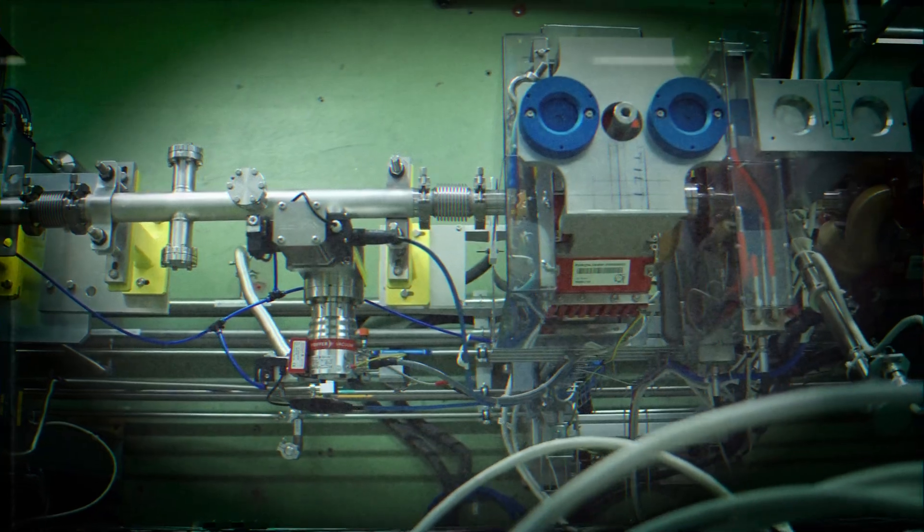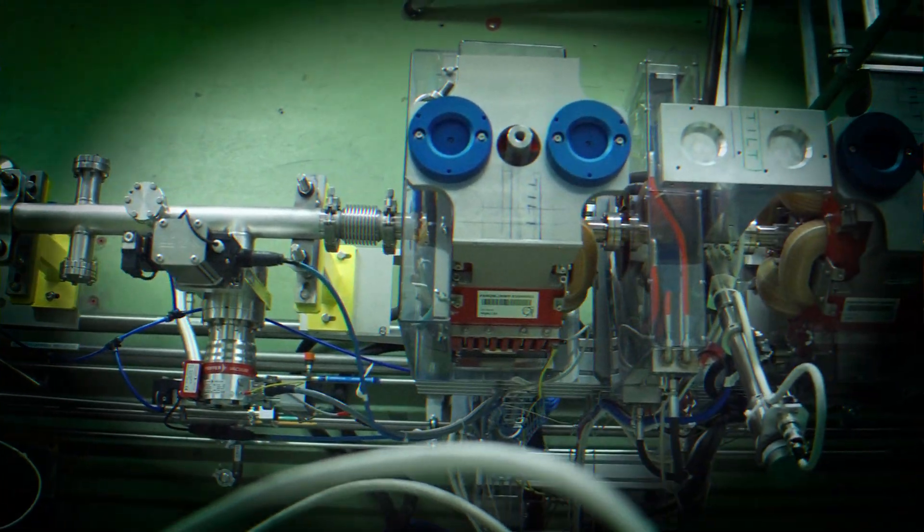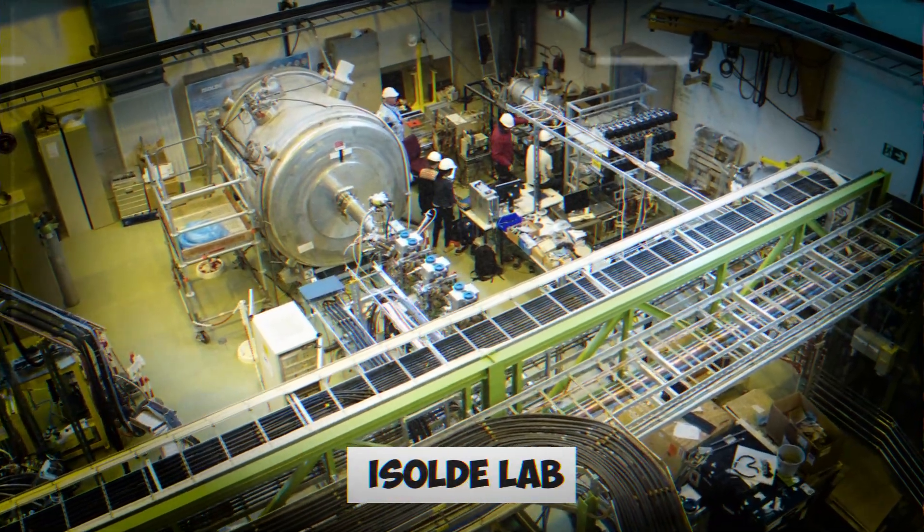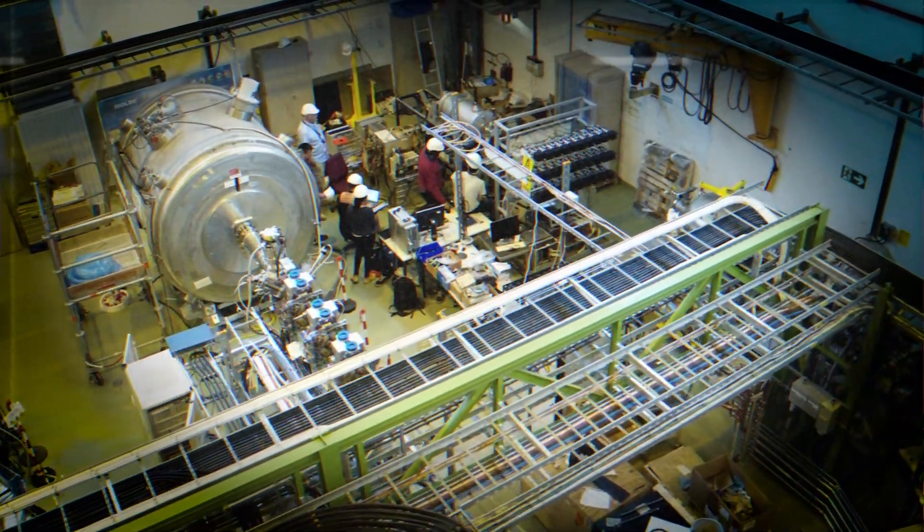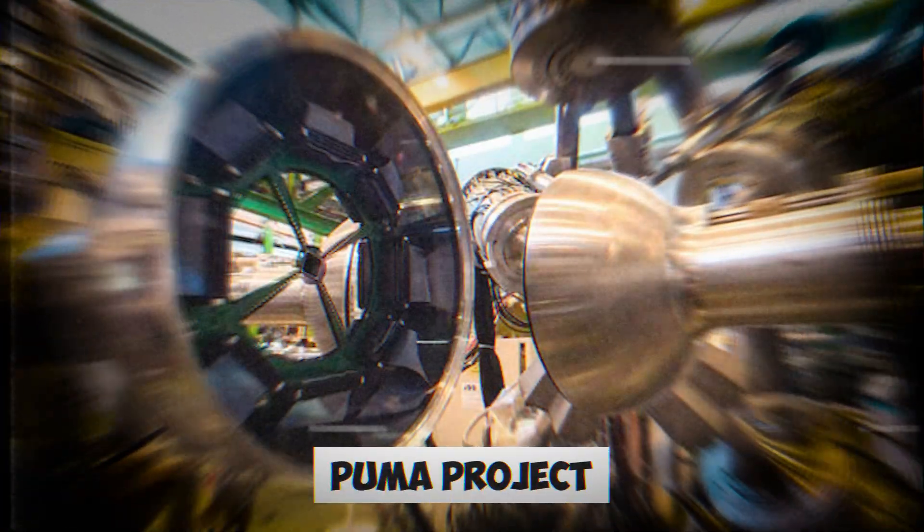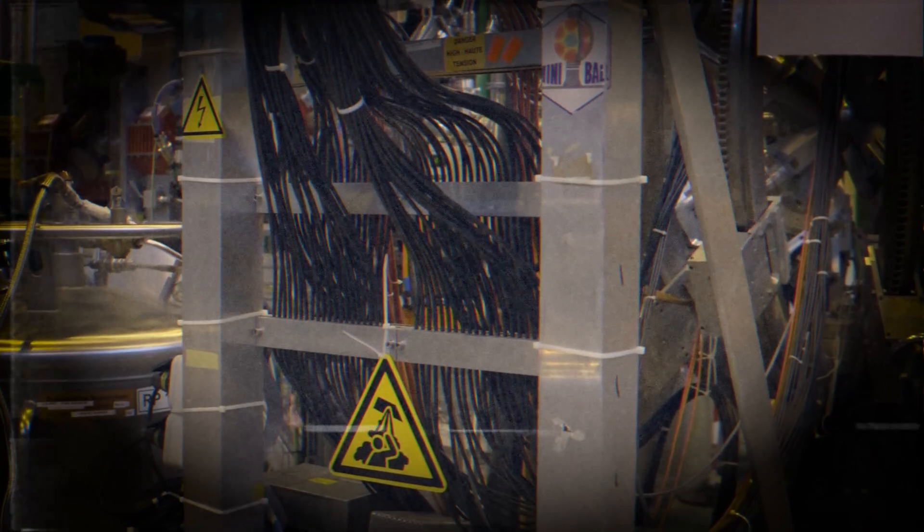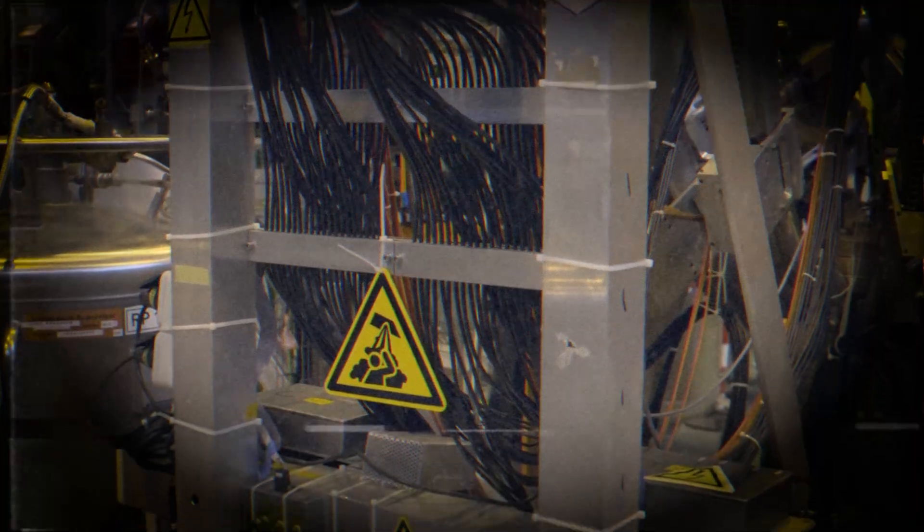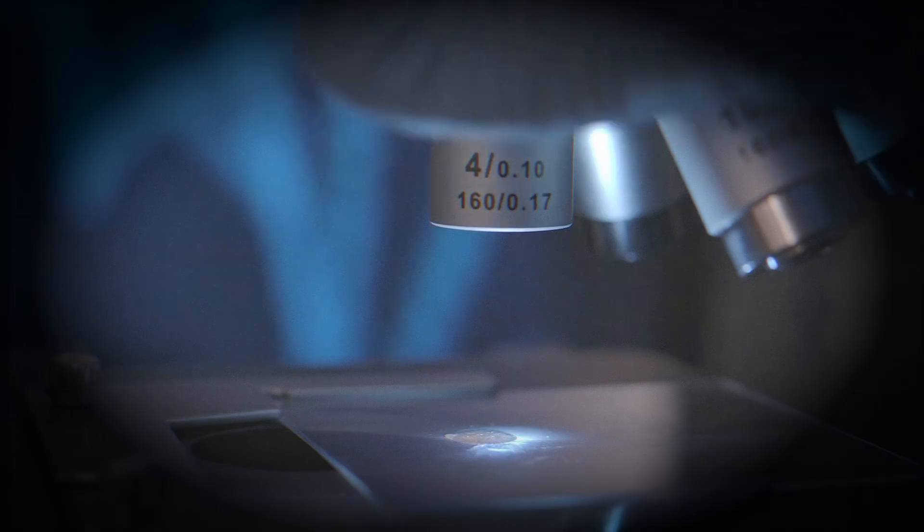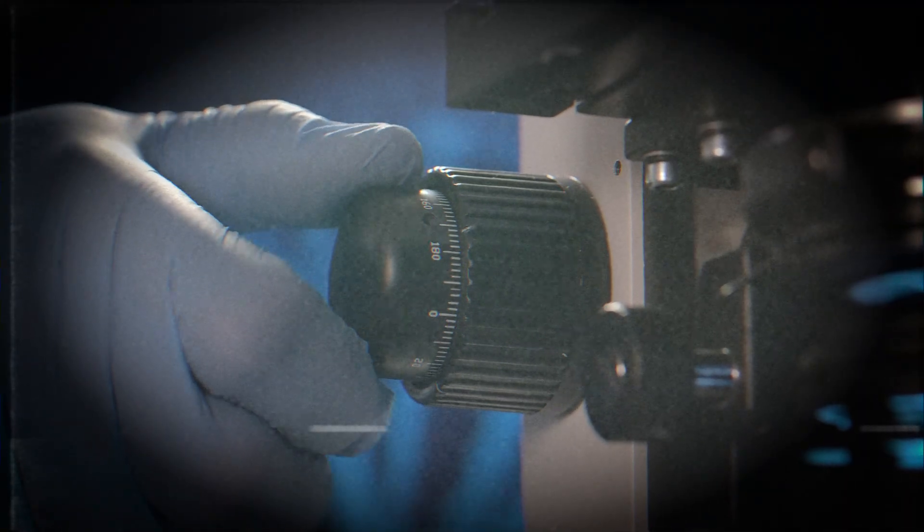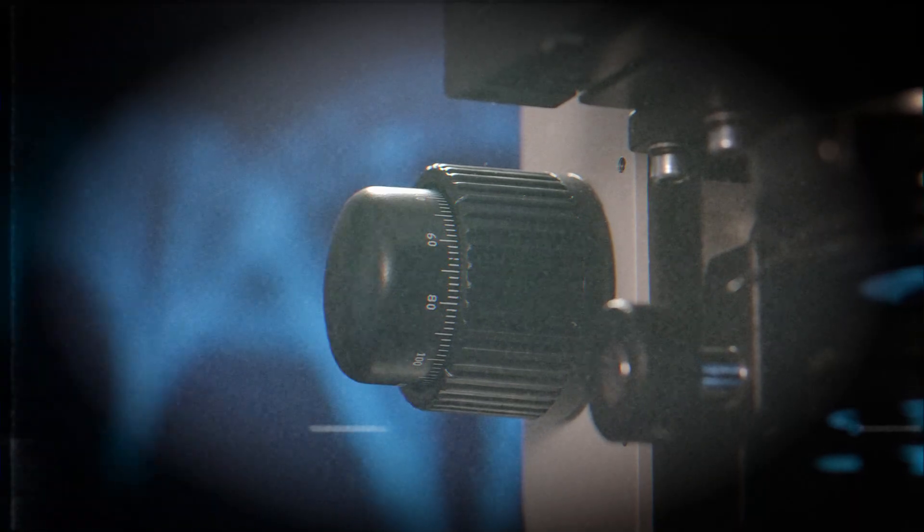Imagine this. You build a portable antimatter trap. You load it with antiprotons at CERN. Then, like a bizarre physics courier service, you drive it across campus to another facility. The Isolde Lab, where exotic, short-lived nuclei are produced. That's the plan of the Puma Project, short for Antiproton Unstable Matter Annihilation. The idea is breathtaking. By letting antiprotons interact with exotic nuclei, scientists can probe the skins of these unstable atoms, studying their neutron distributions in ways no other method can achieve.